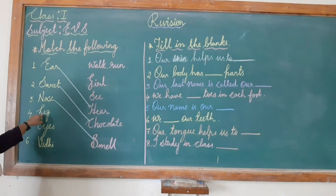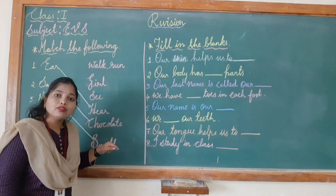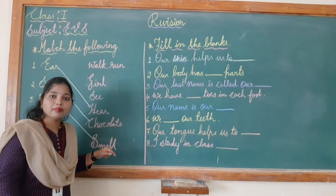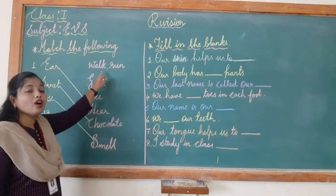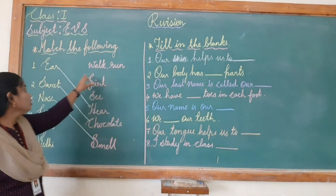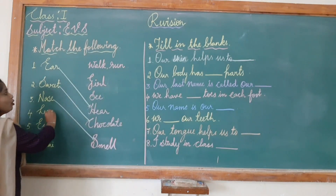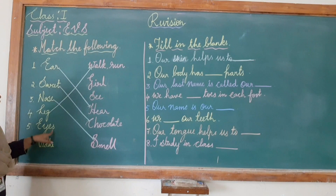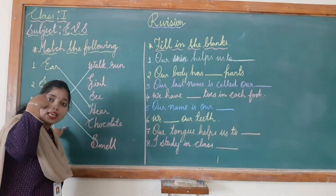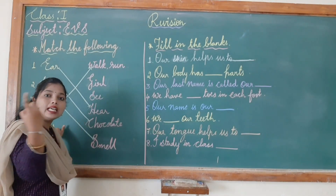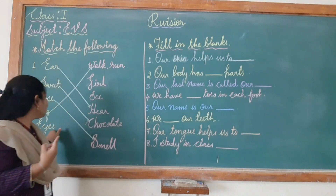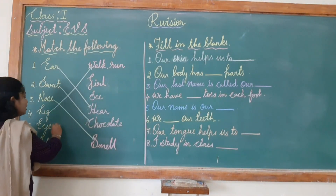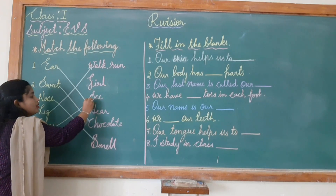Next, leg. Our leg helps us to walk and run and jump. So I will join leg to 'walk or run'. Next, eyes — our eyes help us to see the world. So I will join eyes to 'see'.